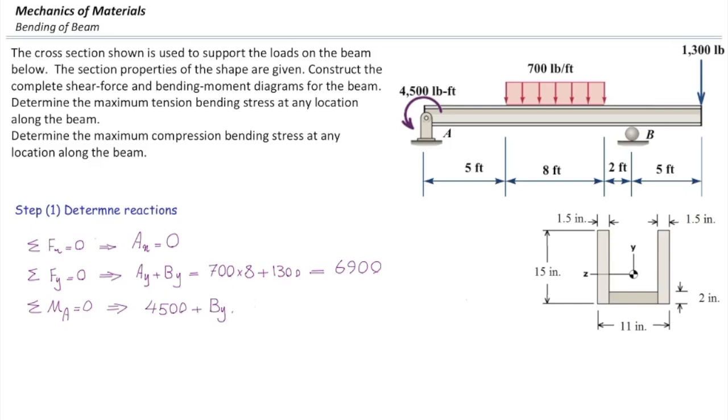Then we do have a moment caused by BY. Again, that would be counterclockwise, so that gets positive sign. The moment produced by that would be BY multiplied by distance of B to A, which is 2 plus 8 plus 5, which is 15.